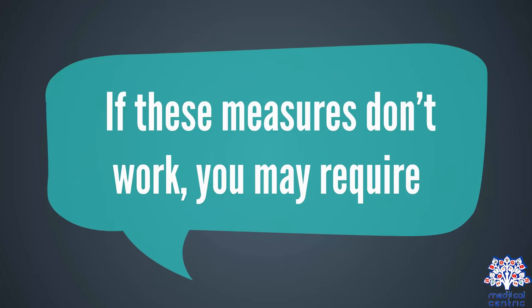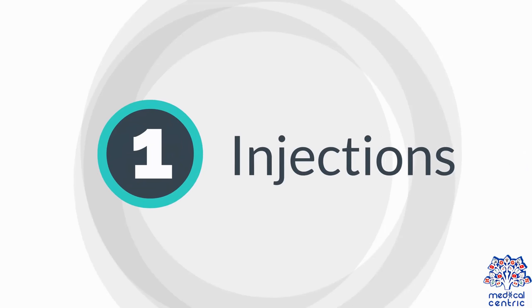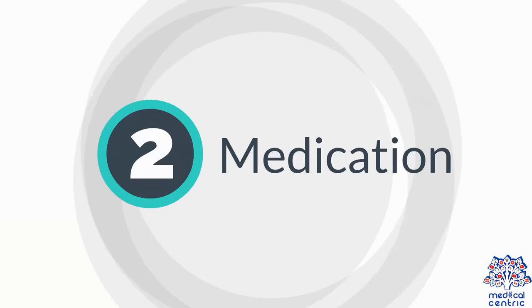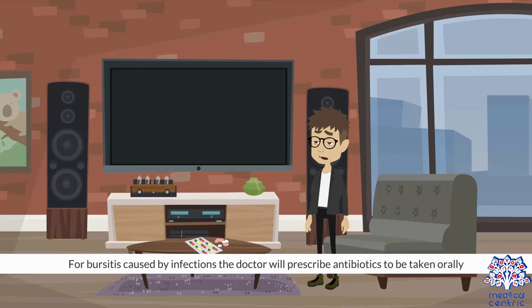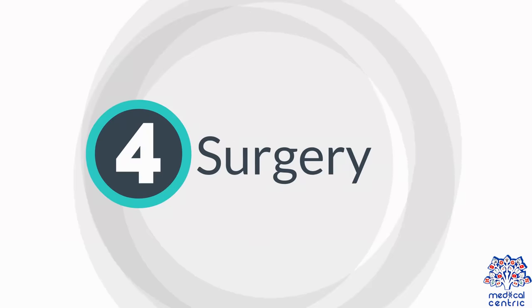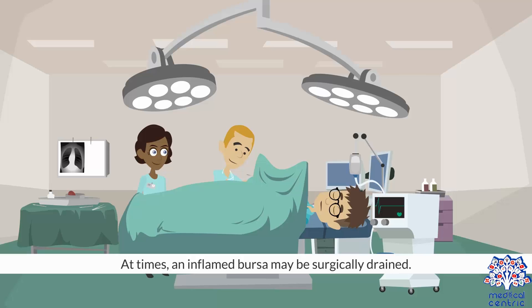If these measures don't work, you may require injections. A corticosteroid drug may be injected into the bursa to relieve pain and inflammation. For bursitis caused by infections, the doctor will prescribe antibiotics to be taken orally. Physical therapy or exercises can help to strengthen affected muscles and ease the pain. At times, an inflamed bursa may be surgically drained.